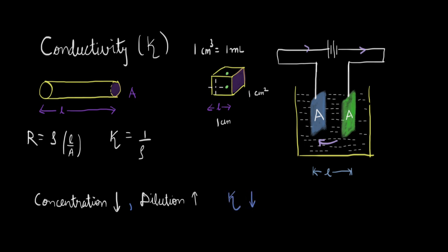Now, instead of reducing the number of ions, we can also think of this in terms of dilution. Say I have three ions as before, but this time instead of reducing the number of ions, I'm increasing the dilution — I add more solvent such that the volume is doubled. If you average it out and look at only one unit volume, the effective number of ions in each unit volume is reduced. So you had three ions in one unit volume; now the same three ions are distributed across two unit volumes, so individually for each unit volume the amount of ions is reduced, and so the conductivity reduces.